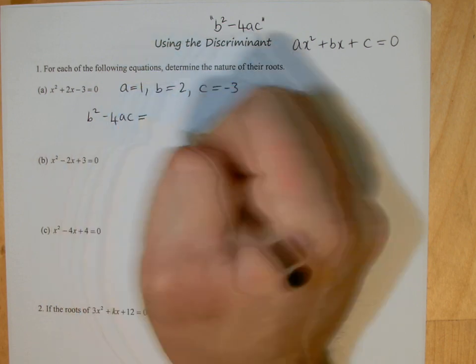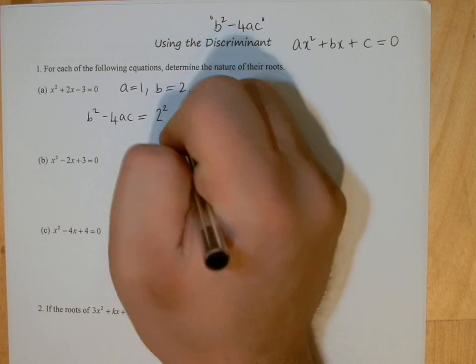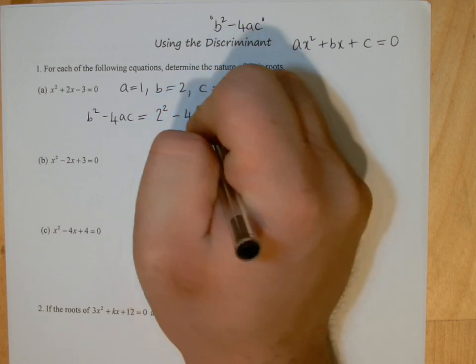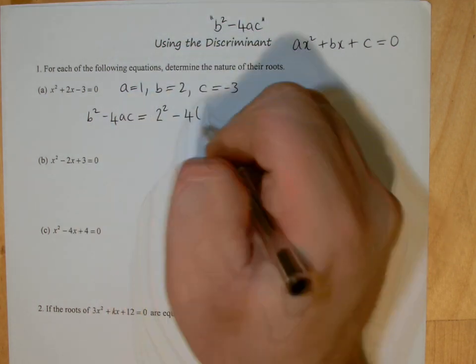So when I work out b squared minus 4ac, it's a simple case of substituting in. So b will be two, so two squared, take away four, times a times c. Well a is one and c is negative three.